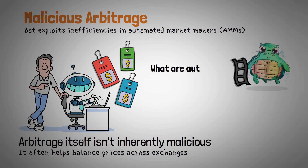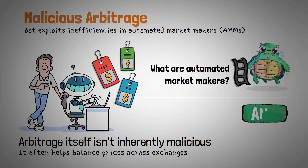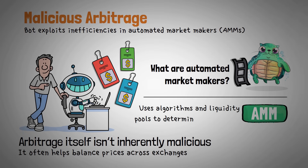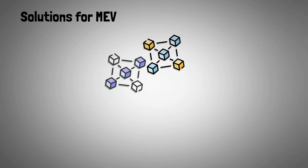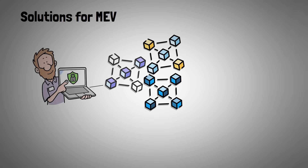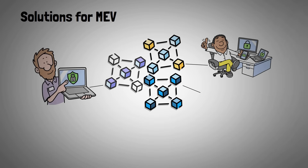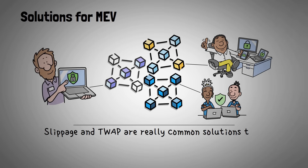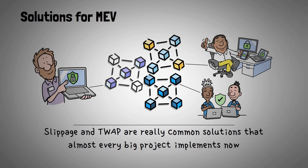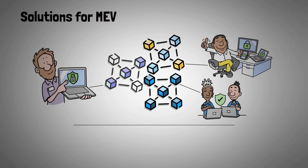We have a whole video explaining AMMs if you want to get into the details, but simply put, an AMM is a type of decentralized exchange that uses algorithms and liquidity pools instead of traditional order books to determine asset prices and perform trades. Now, let's talk a little bit about solutions, because most of the time when you hear about MEV, you're going to hear about the bad types — the kind that harms users. Each blockchain has their own solution to the MEV problem, and some have gotten fairly creative with it. We've already mentioned slippage and time-weighted average prices, which are really common solutions that almost every big project implements now, but let's get into some more of the sophisticated solutions.